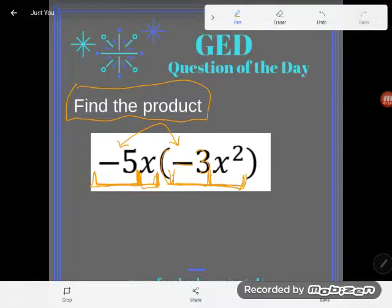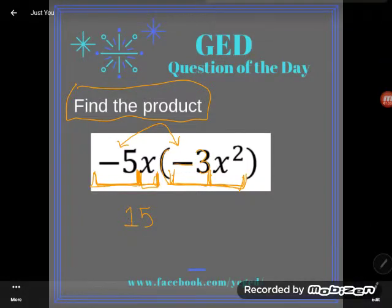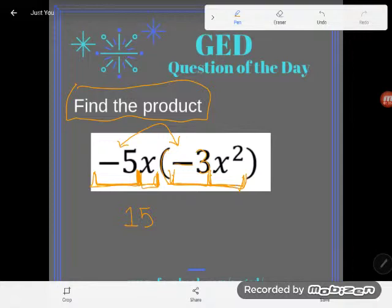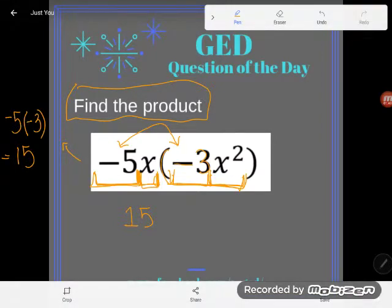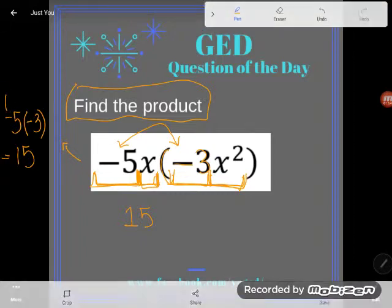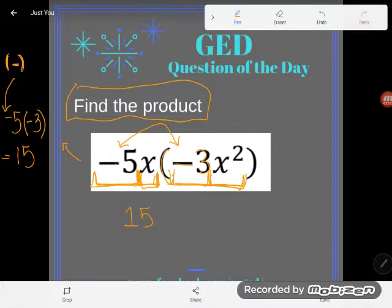So first I'll do -5 times -3, and I can do this in my head. I know it's positive 15. But if you had this problem on the GED, you would have a calculator, so even if you can't multiply negatives by hand, you could type that into your calculator: -5 times -3, and it would tell you that it's positive 15. If you're getting an error message on your TI, it's because you're using the minus key instead of the negative key. The negative key is down at the bottom of the calculator.